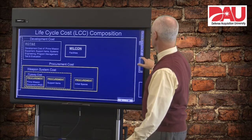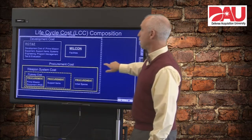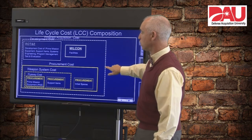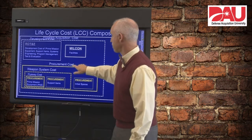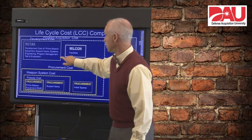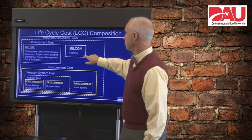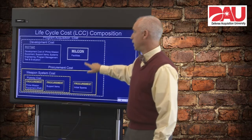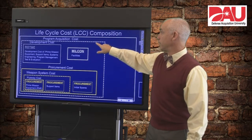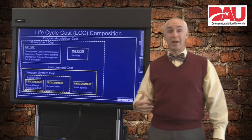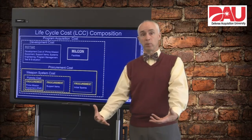To get another type of cost that we talk about — the program acquisition cost — you put all of those things together: your RDT&E development cost, anything for military construction, and your procurement costs. Put all of those together, and that is what we call our program acquisition cost. So that's the total cost of acquiring that program.